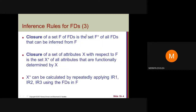The closure of a set F of functional dependencies is the set F+, where F+ is the set of all functional dependencies that can be inferred from F. The closure of a set of attributes X with respect to F is the set X+, which is the set of all attributes that are functionally determined by X. The closure set X+ can be calculated by repeatedly applying inference rules 1, 2, and 3 using the functional dependencies in F.